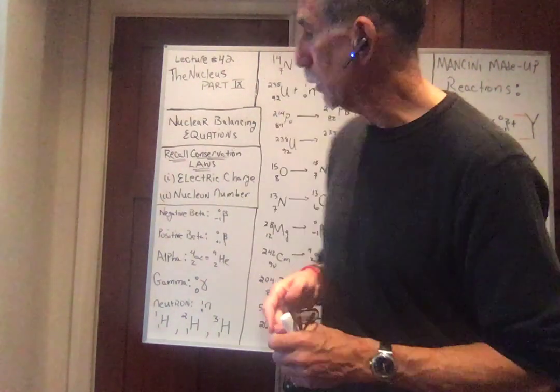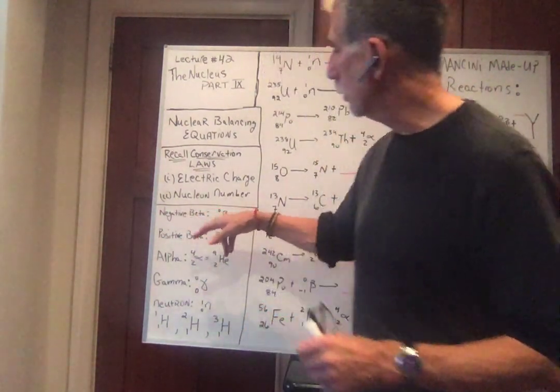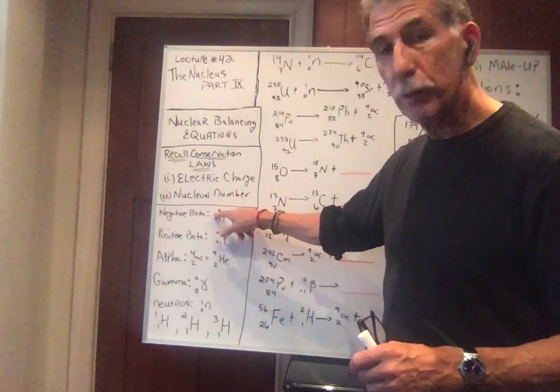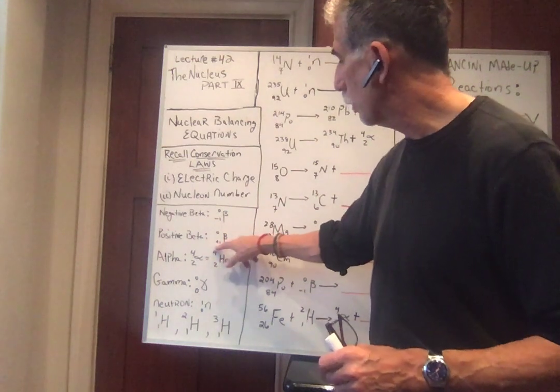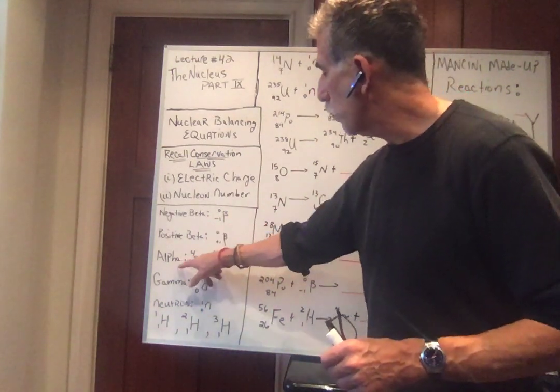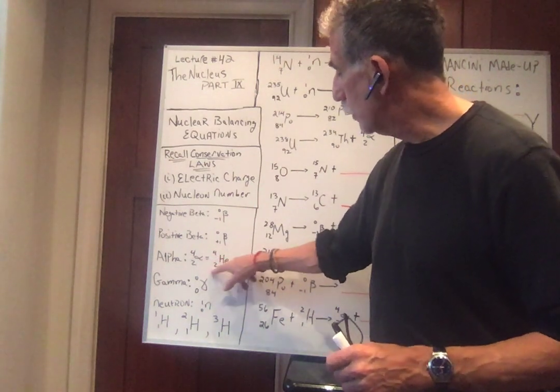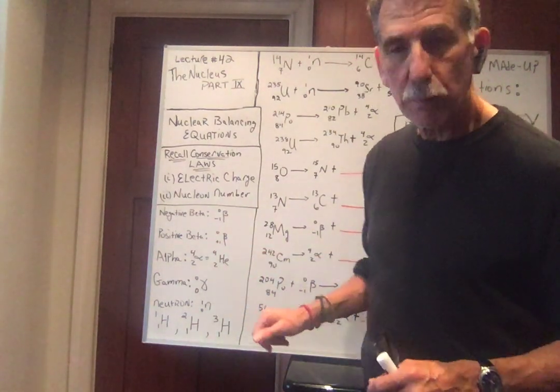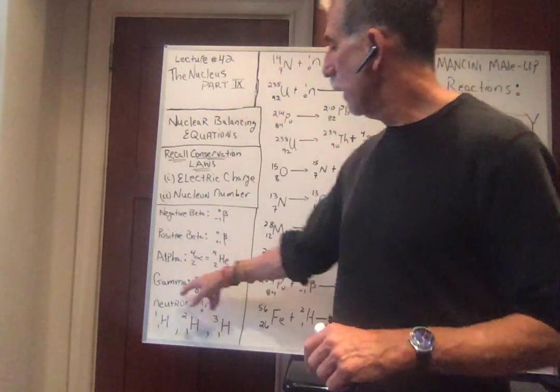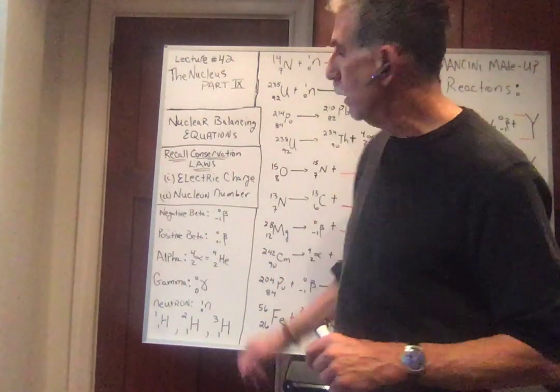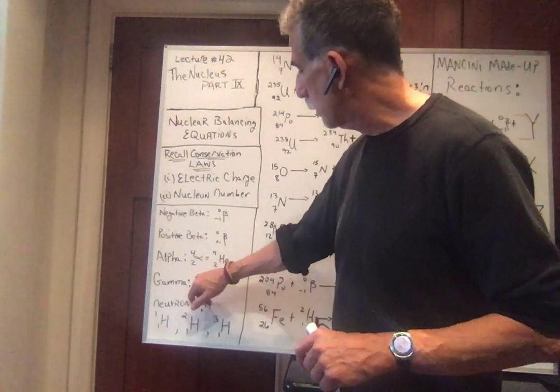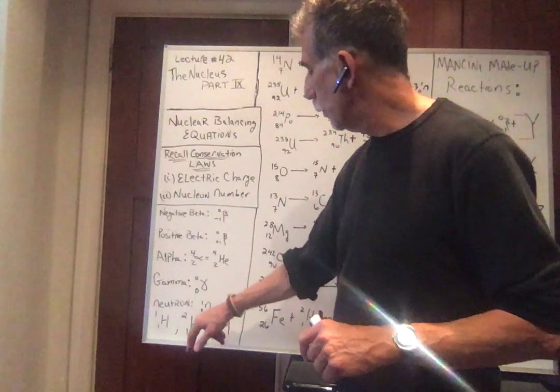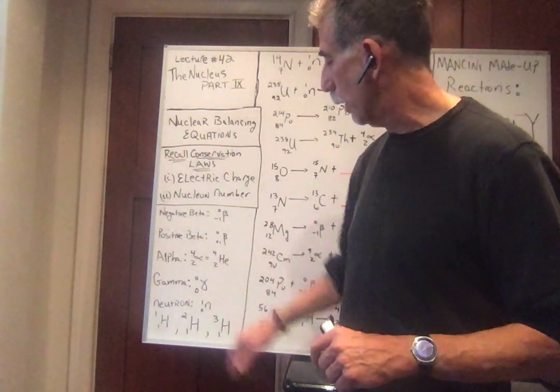Let's review our particles. Negative beta particle is just an electron. It has a charge of minus 1. There are no nucleons. Positive beta has a charge of plus 1, no nucleons. Alpha particle, which is just a helium-4 nucleus, has two protons and four nucleons, which means two protons, two neutrons. So the charge of an alpha particle is plus 2. Gamma was just an energetic photon. Gammas have no mass, no nucleon number, and no electric charge. And finally, we have a neutron, which has zero charge, but one nucleon.